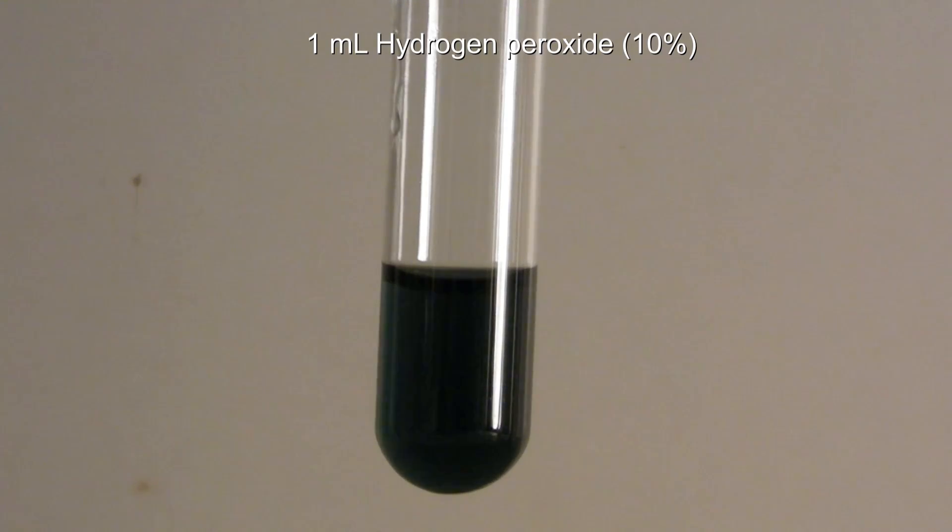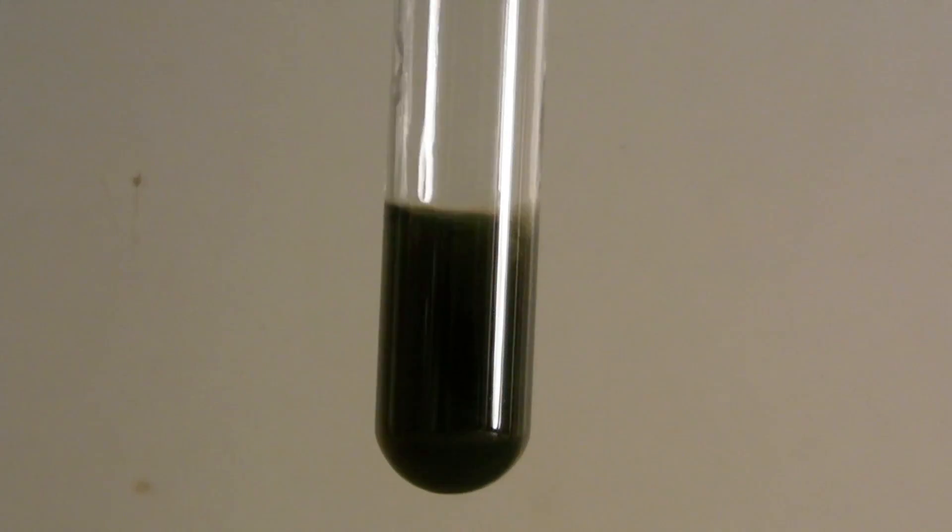Then 1 ml of 10% hydrogen peroxide is added. The chromium complex can be oxidized quite easily by hydrogen peroxide, which causes the formation of Chromate-6.